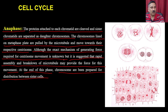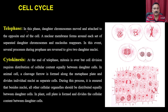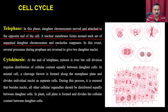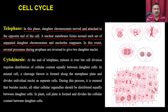Then comes telophase. In telophase, daughter chromosomes move and attach to the opposite ends of the cell. The nuclear membrane forms around each set of separated daughter chromosomes, and the nucleolus reappears. Several processes from prophase are reversed to give the two daughter nuclei.